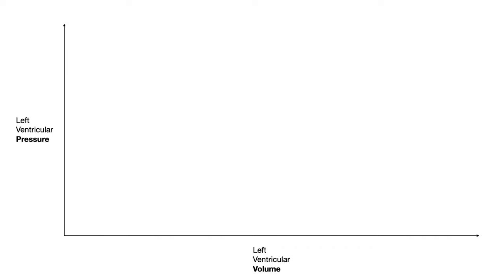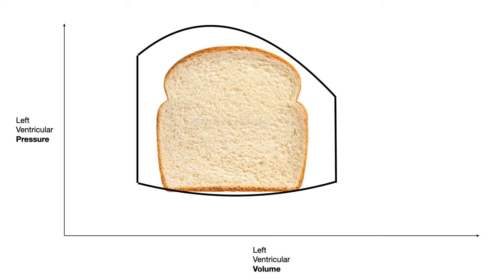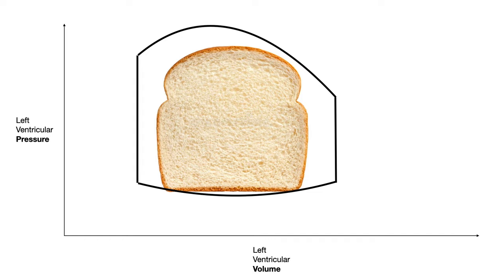The shape of the pressure volume loop looks like a piece of bread — but on test day chances are they're going to give this shape to you, so you don't really have to worry about reconstructing it. What you do need to know are four points on the curve. I've shown them here color-coded to make things easy for you.